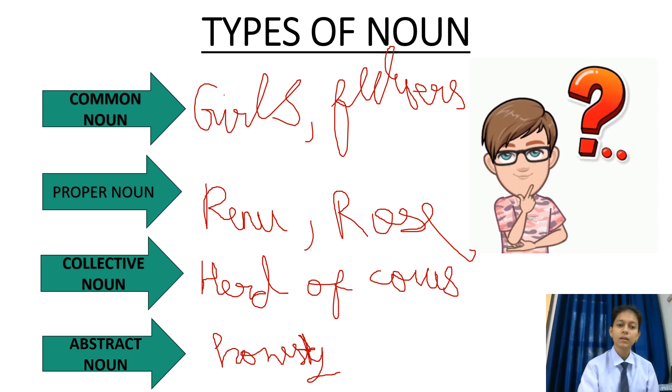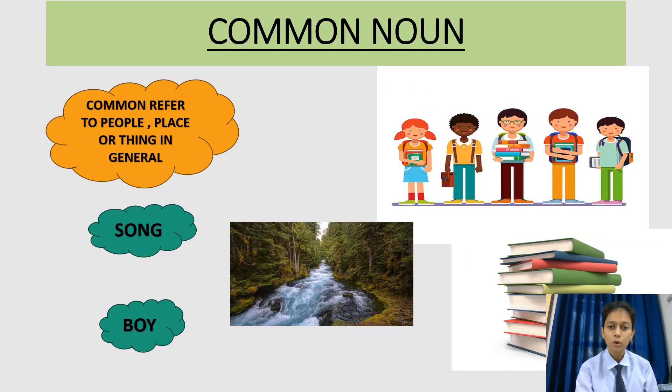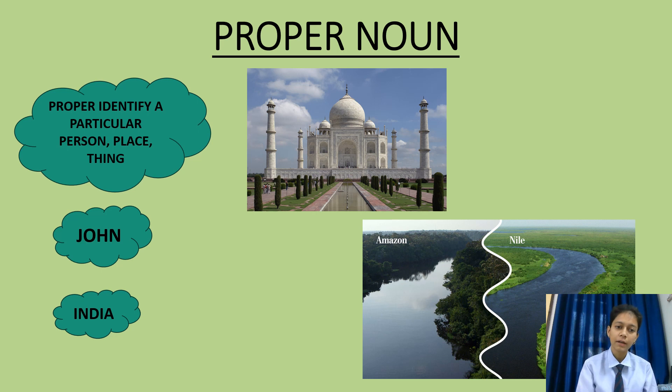Okay, students. Let's study in depth. Common noun. Common refers to a person, place or thing in a general. Songs. I really like songs, but I have not told which song, so song is common noun. Boys. I want to go to India. So, this is a proper noun because I have put it in a proper statement.